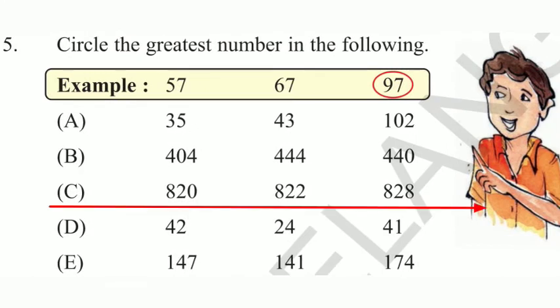C. In this, 820, 822, 828. In this, which is the greatest number? Yes. 828. Next.